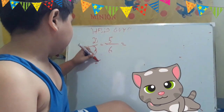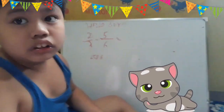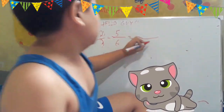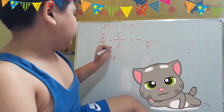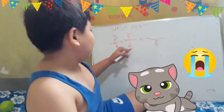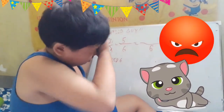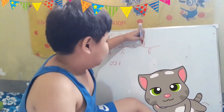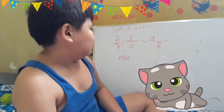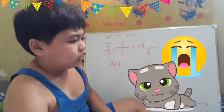LCD is six. So six — the denominator — six. Six divides three is two. Two times four. Six divide six is one. One times two equals two.